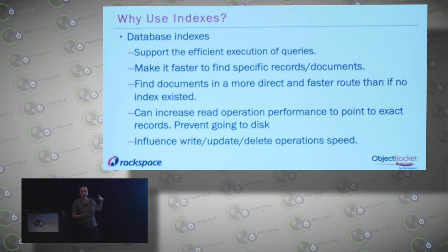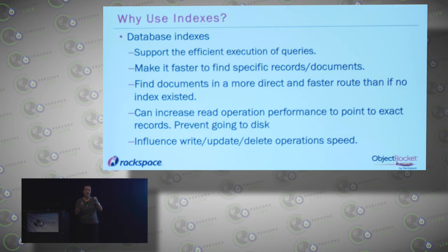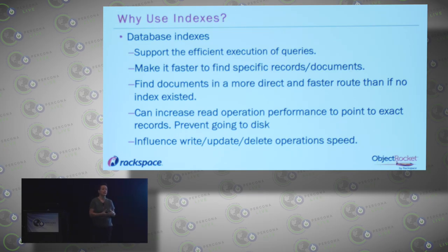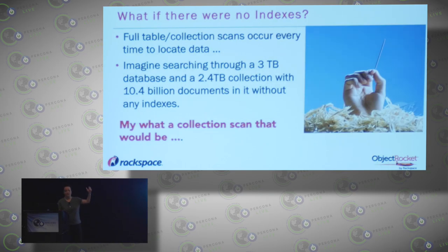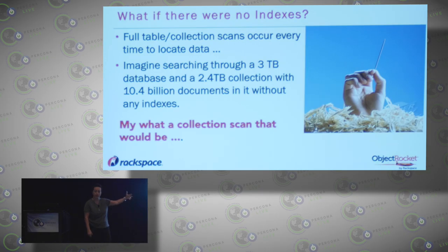Why do we want to use indexes? You want to get to your data the fastest and most efficient way. You want to be able to find documents. One issue between versions was an 'index key too long' error in version 2.4 — when an index entry is missing or points to a document, that document might as well be gone; you're not going to be able to find it. With a large collection — terabytes and terabytes — with no indexes, having to scan the whole thing is like a needle in a haystack.